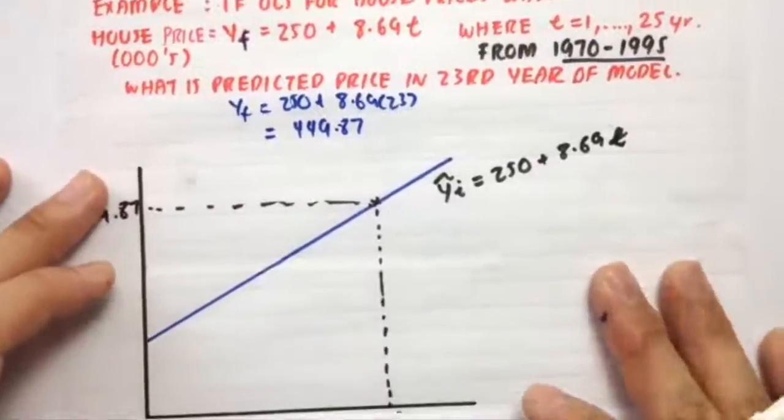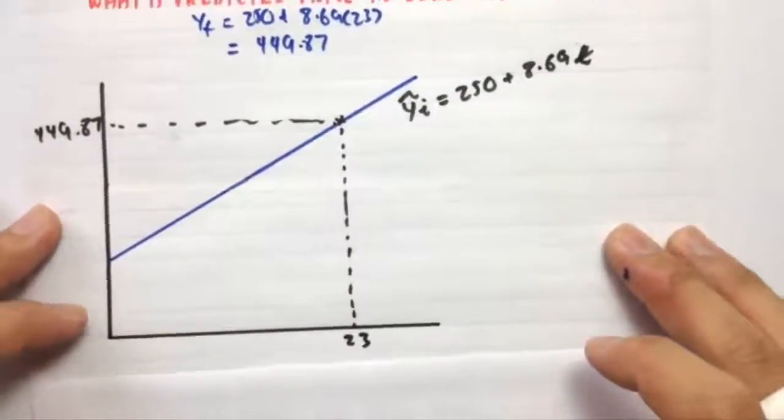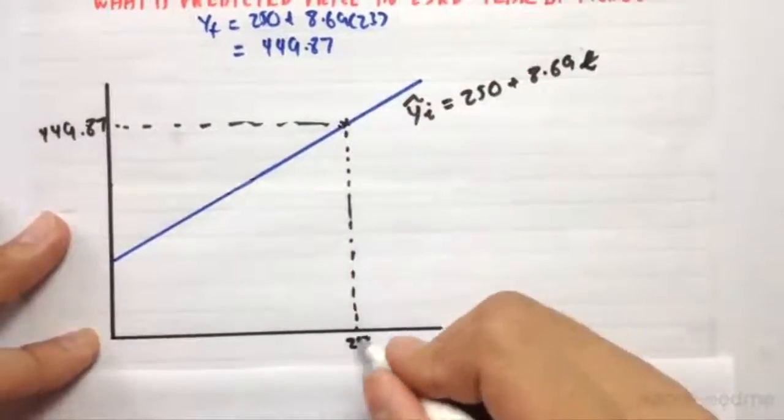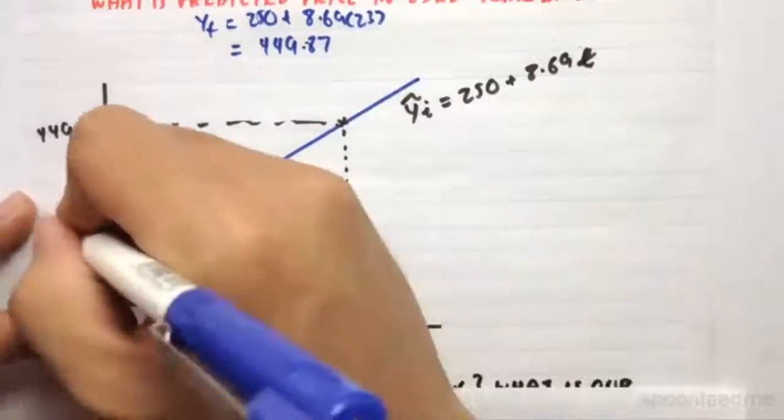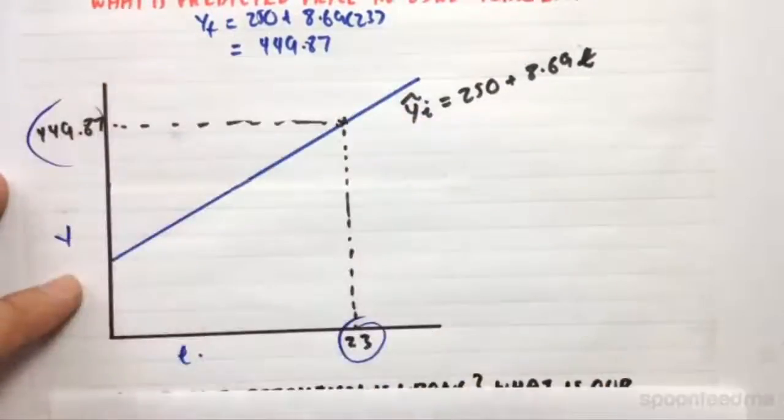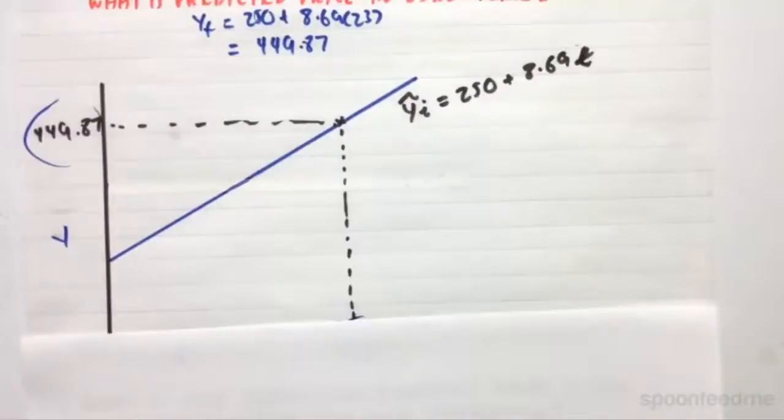So if we drew it on something like this, like a curve, it'd be 23 here, T at the bottom, Y here, 449.87.